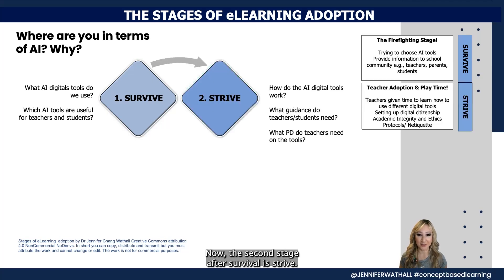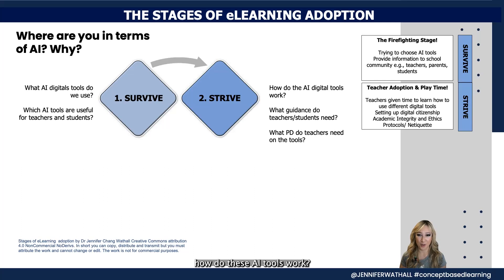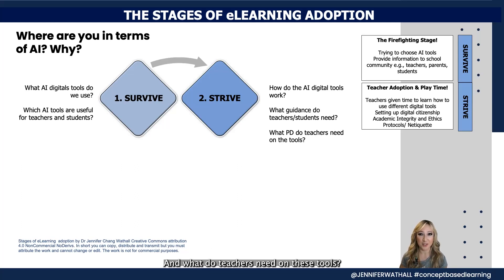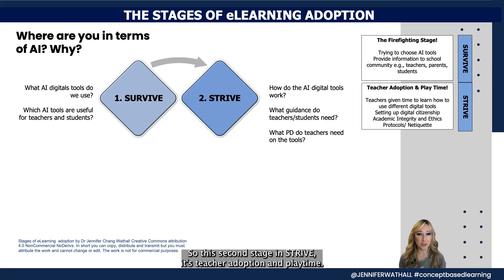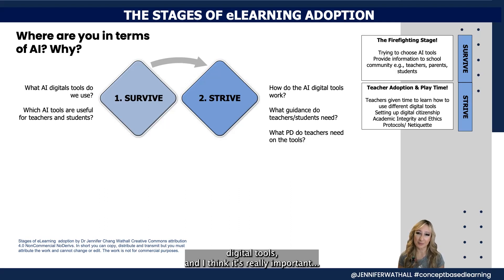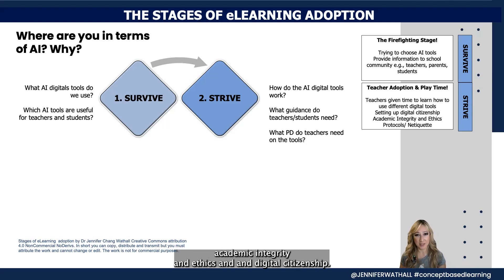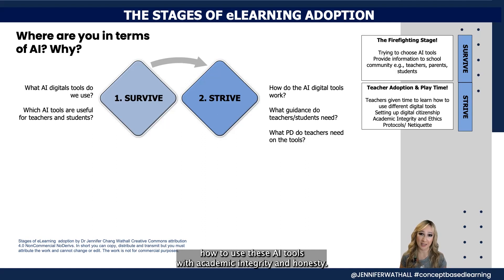The second stage after Survive is Strive. In the Strive stage we're working out how these AI tools work, what guidance teachers, students, parents and the school community need, and what professional development teachers need. This stage is about teacher adoption and playtime — teachers are given lots of time to play and use different digital tools. It's also when schools should be developing digital citizenship, academic integrity, ethics protocols, and netiquette with students — teaching them how to use AI tools with honesty and integrity.